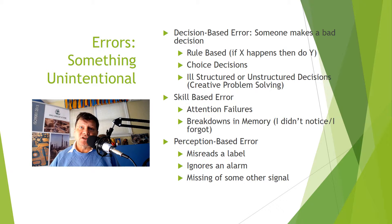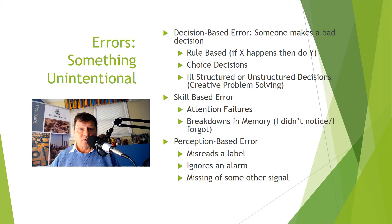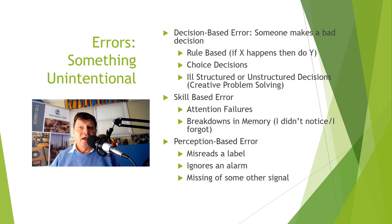In the case of skill-based errors, these are the ones we most commonly think of as human errors: attention failures or breakdowns in memory. 'I didn't notice. I forgot. I lost concentration.' The final type is perception-based, in which an employee misreads a label, ignores an alarm, or misses some other signal. For example: 'I know I was supposed to take a sample when the red light goes on, but I just didn't see it.'